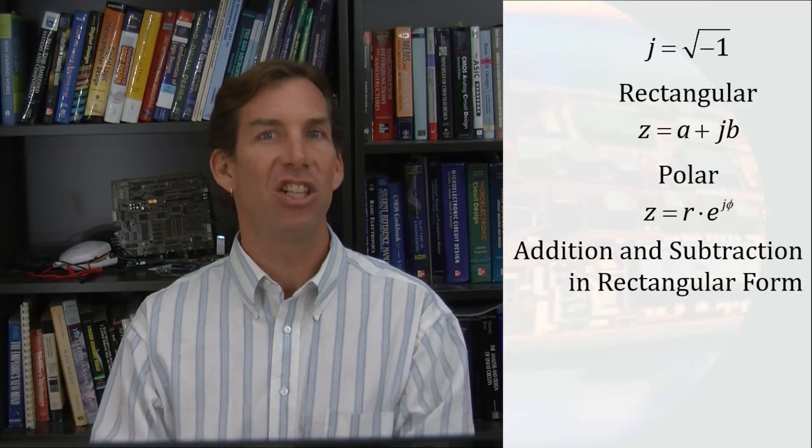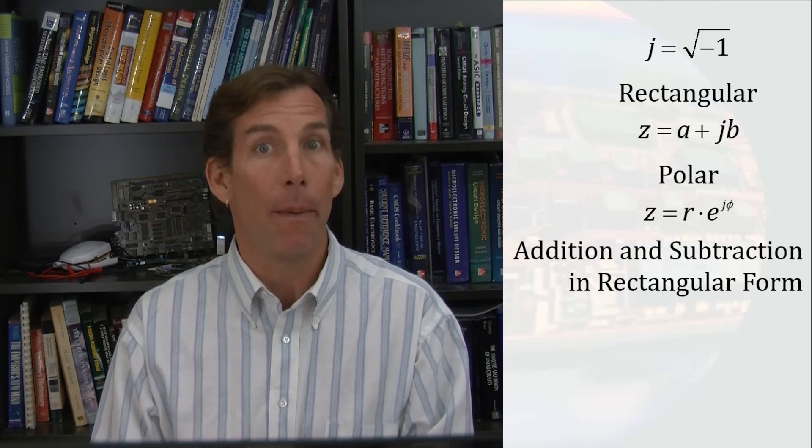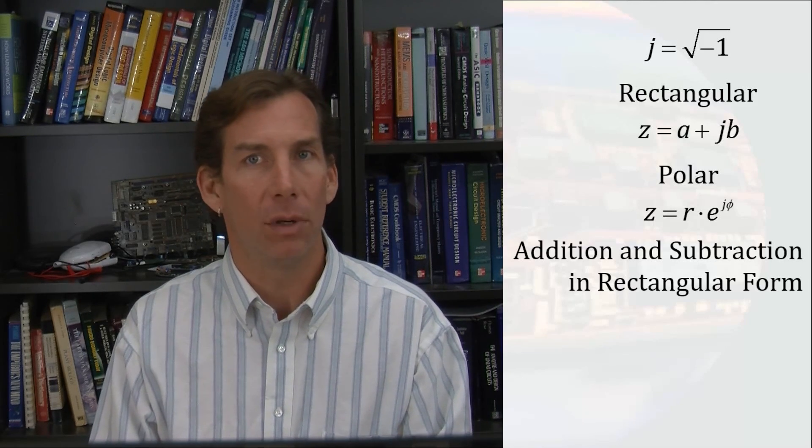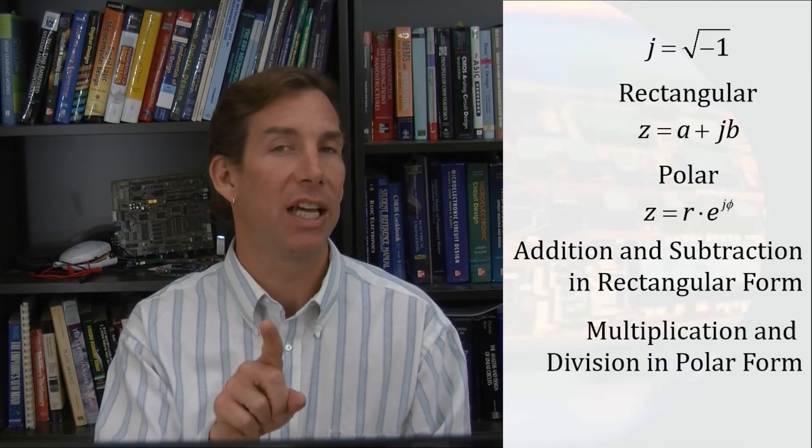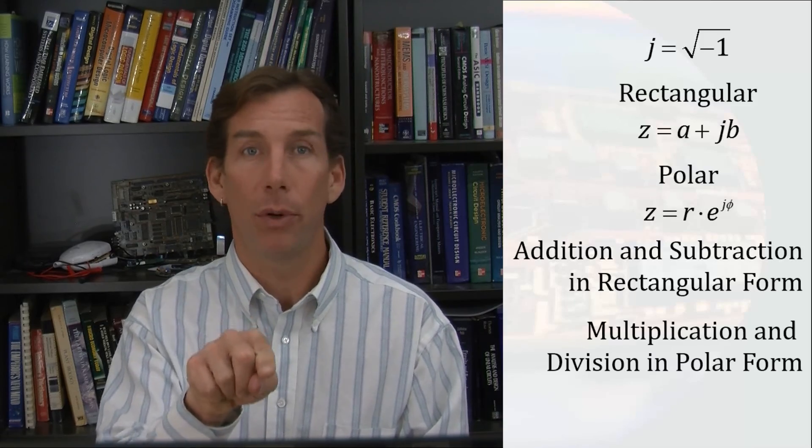We also learn that addition and subtraction of complex numbers must be done in rectangular form. We also notice that multiplication and division were much easier in polar form.